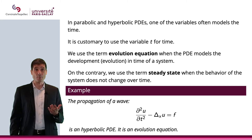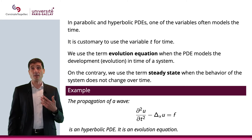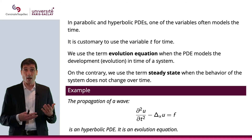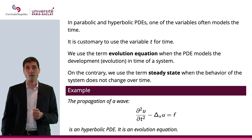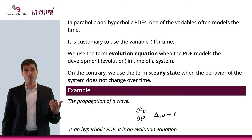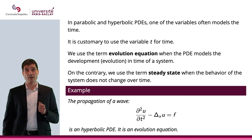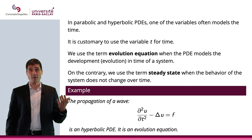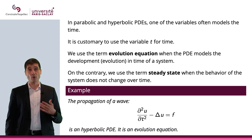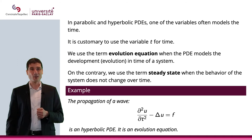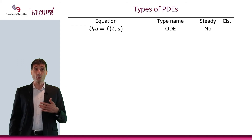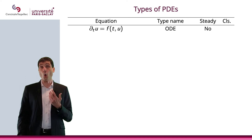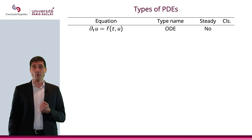For example, consider the propagation of a wave — whether an acoustic wave, an electromagnetic wave, or a wave from throwing a rock in a lake. That is going to be a hyperbolic PDE and it's an evolution equation. By the way, the operator second derivative in time minus Laplace is often called the d'Alembertian, and we often use a square symbol □ to represent this operator. Now, if you look at dₜu = f(t, u), that will be an ODE, because there is only one variable with respect to which you differentiate — something we discussed in Chapter 1 — and it is obviously not steady.